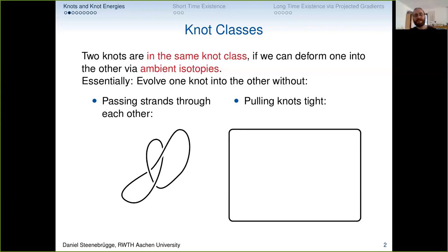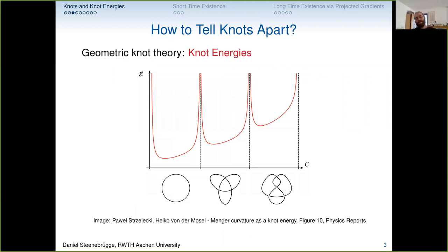Basically we want two knots to be the same if we can take a piece of rope, tie our knot, glue the ends together, and just push it around until we have the second configuration. It turns out it's not really that simple to prove that two knots are different. There's classical knot theory — comparably old, much too complicated because it involves algebra — which has all these invariants to distinguish knots.